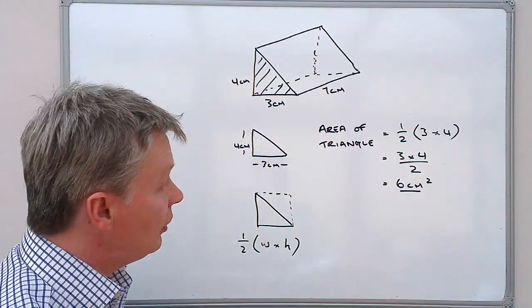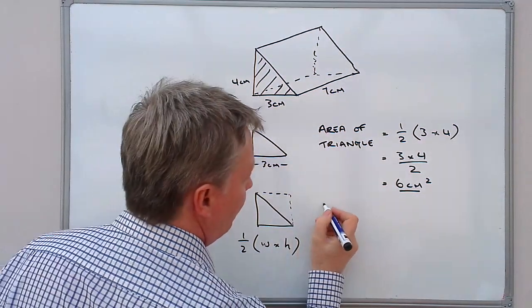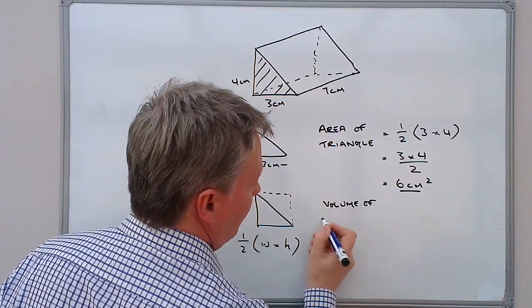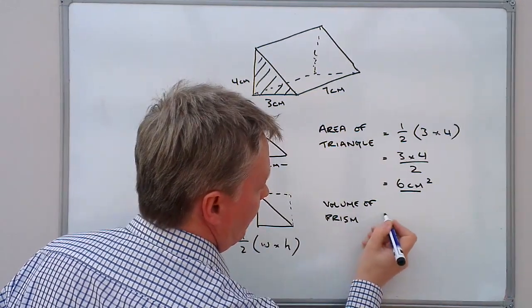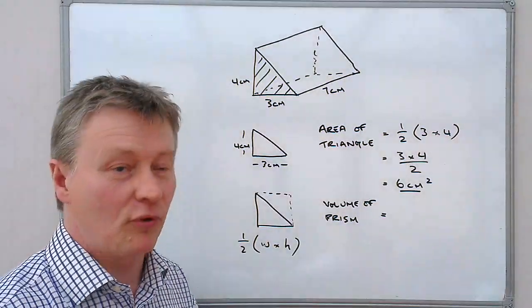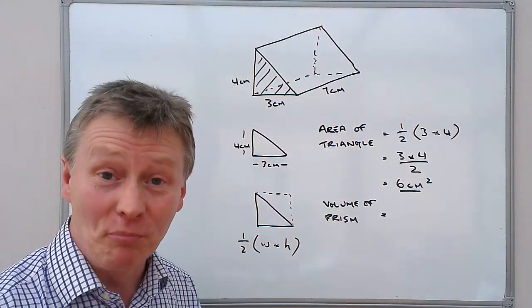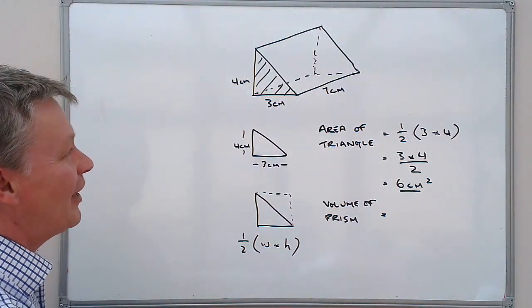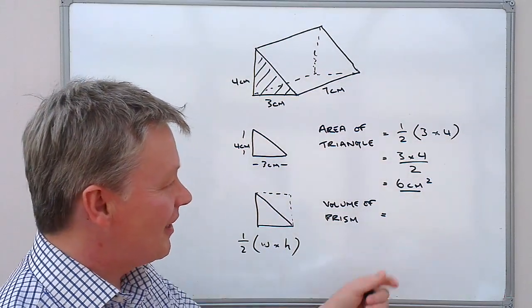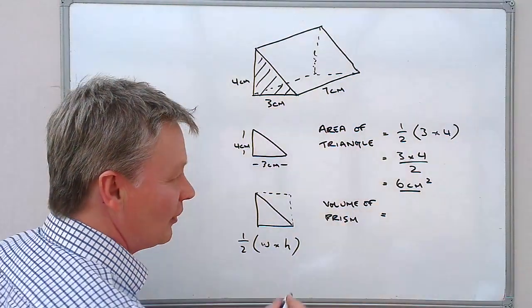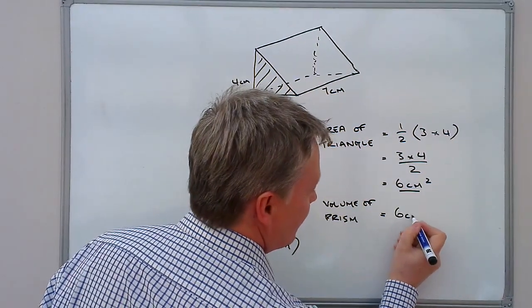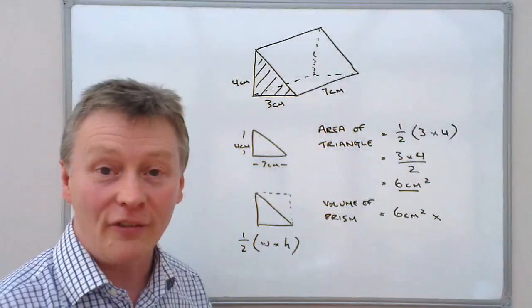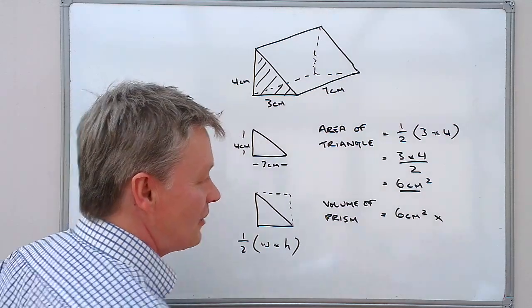So the area of this piece here is 6 centimetres squared, and in order to calculate the volume, I'll put volume of a prism. It's actually a triangular prism, it's a bit like a Toblerone bar if you're in the UK. But it's the area of the triangle, which is 6 centimetres squared multiplied by the overall length, which is 7 centimetres.